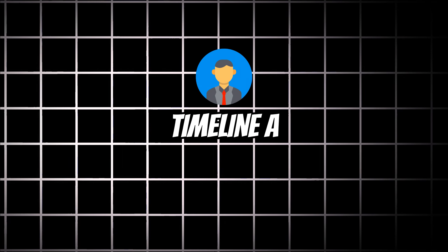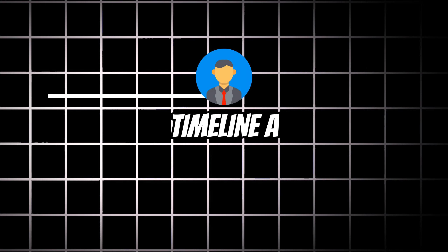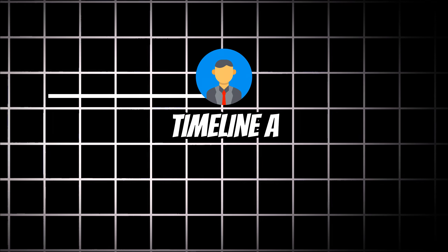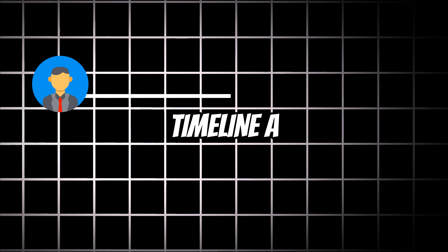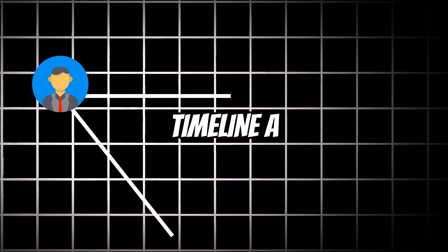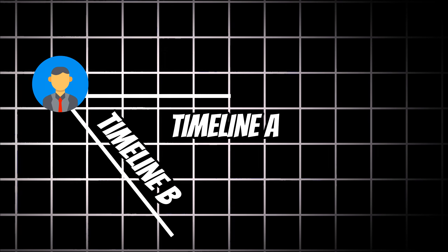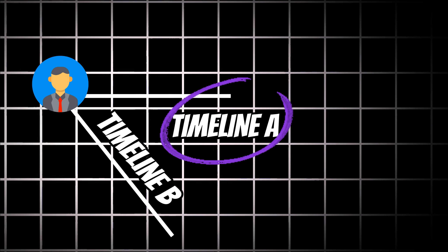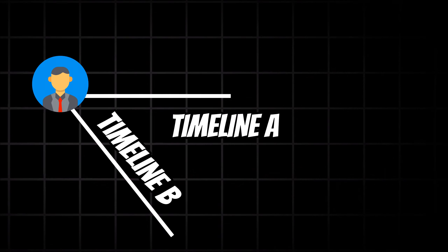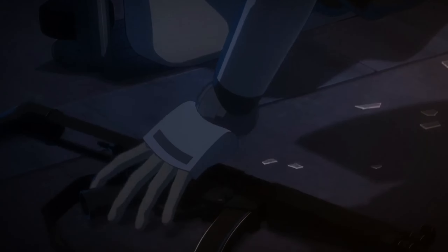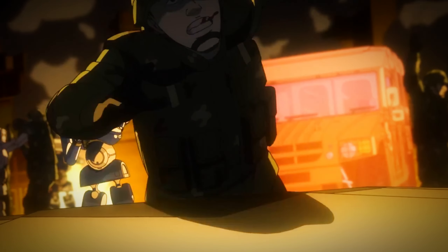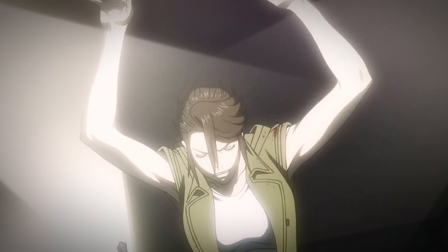Suppose there is a timeline A. In that timeline, a character travels to the past and changes something. That change won't affect the future of timeline A, but will create a different timeline with a different outcome, which we'll call timeline B. The original timeline where the character came from will remain unaffected. So a question arises: why would both humans and machines go back in time if it isn't going to change anything?